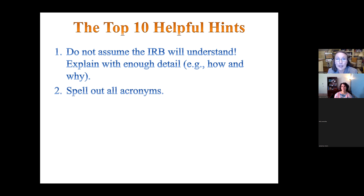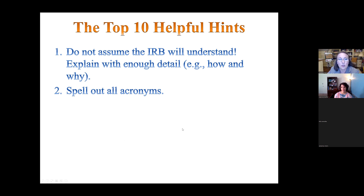Helpful hint number two: spell out all acronyms. You don't know who will be reviewing your application. You may be in education and use a lot of acronyms, but the reviewer may be in psychology or the College of the Arts. They are not familiar with all of our alphabet soup in education. Spell everything out — it may get long and tedious, but it's best. This also applies to your informed consent, since parents receiving it may not know professional acronyms.